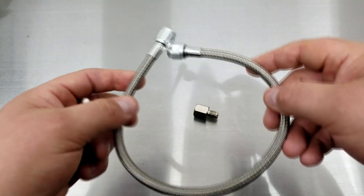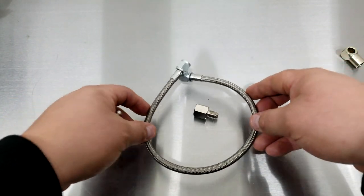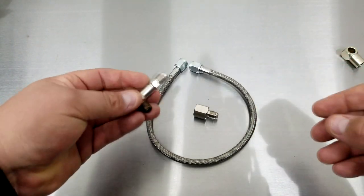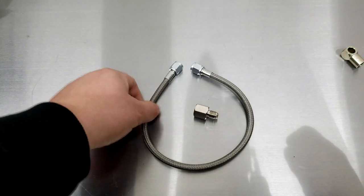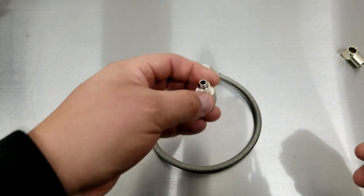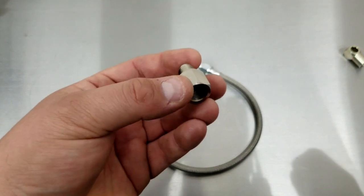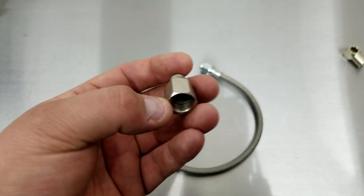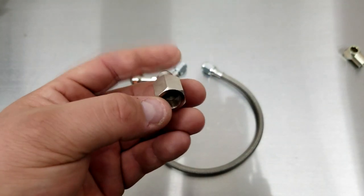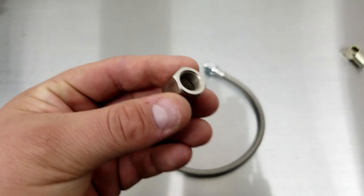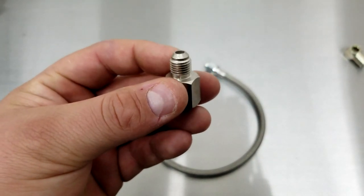Remember guys, this isn't the stock placement. It's in the exact same place as it was for factory. So this 4AN line, and I got this adapter for the factory clutch hard line. So it is an M12 by 1 female to a 4AN male.